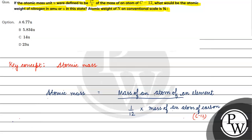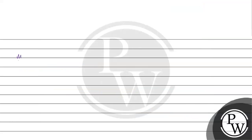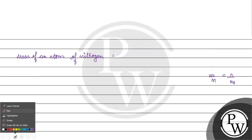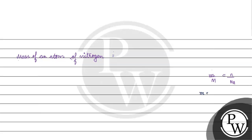If we want to find the mass of an atom of nitrogen, we know that mass divided by atomic mass equals number of atoms divided by Avogadro's number. So the mass of one atom equals atomic mass times 1 divided by Avogadro's number. The mass of an atom of nitrogen comes to 14 divided by Nₐ.